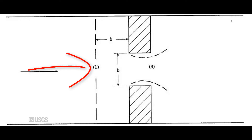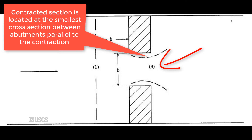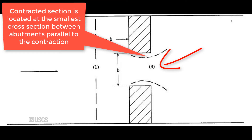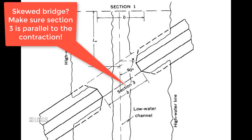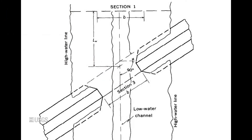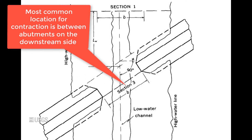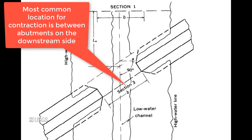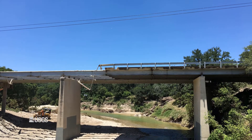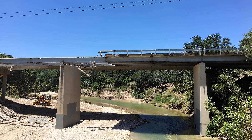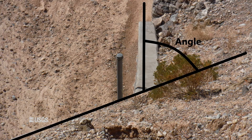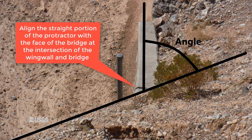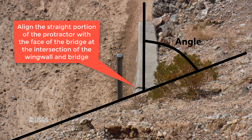After the approach section is finished, you can move on to the contracted section. The contracted section is located at the smallest cross section between the abutments on a line parallel to the contraction. If the bridge is skewed to the flow, Section 3 is still parallel to the contraction, even though the minimum section may be perpendicular to the abutments. The most common location for the contracted section is between the abutments at the downstream side of the bridge, but it doesn't hurt to break out a steel tape and double check. Measure the wing wall angles using a protractor and the lengths using a steel tape. The easiest way to determine the angle is to align the straight portion of the protractor with the face of the bridge at the intersection of the wing wall and the bridge, then read the wing wall angle directly.